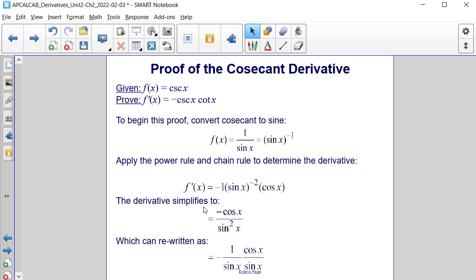The derivative then simplifies to negative cosine of x divided by sine squared of x, which can be rewritten as two separate fractions being multiplied together: negative 1 divided by sine of x times cosine of x divided by sine of x.